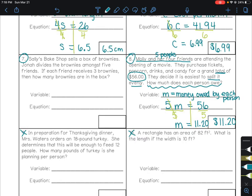Let's go back to number seven. Sally's Bake Shop sells a box of brownies. Jonah divides the brownies among five friends. If each friend receives three brownies, then how many brownies are in the box? So let's see. Five friends. Each friend gets three brownies. It doesn't say that Jonah's getting any. It seems like Jonah is giving away the brownies. Then we want to find how many are in the box to begin with. We're looking for the total. So I'm going to say B equals total brownies in box.